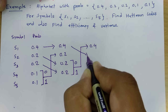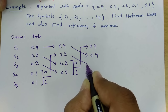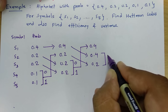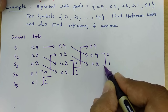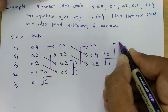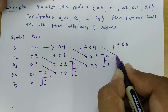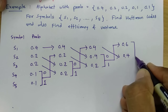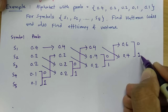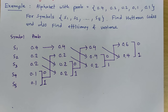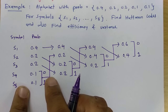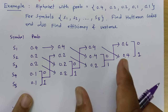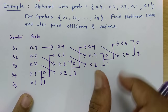Again add the last two probabilities: 0.2 plus 0.2 equals 0.4, and move it to the top since this equals the existing 0.4 but we move it as high as possible. Assign 0 and 1 to these two. Now add these two 0.4 values: assign 0 to one, 1 to the other, giving 0.6, which moves to the top. Now only two symbols remain, so assign bit 0 and bit 1 to complete the tree.